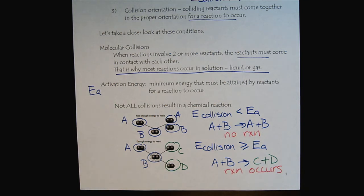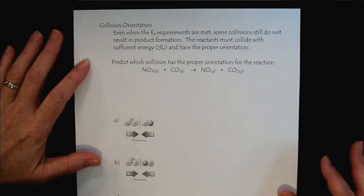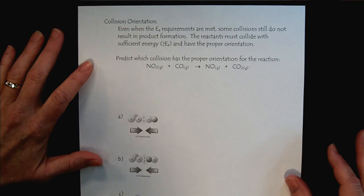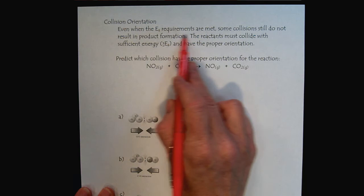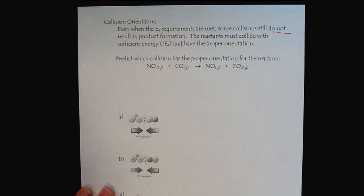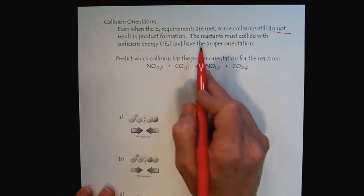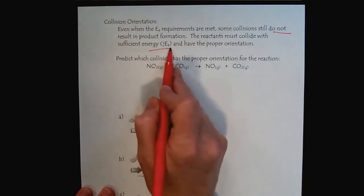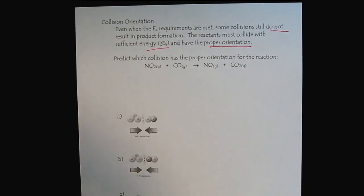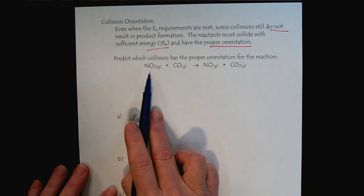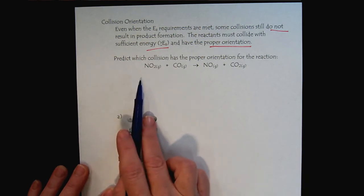Now let's go on to orientation. And here is a diagram to represent one reaction. Remember that even if the activation requirements are met, some collisions still do not occur because not only do we have to have sufficient energy, but we have to have proper orientation. So before we look at the possibilities, we want to step back from our reaction and note the changes.